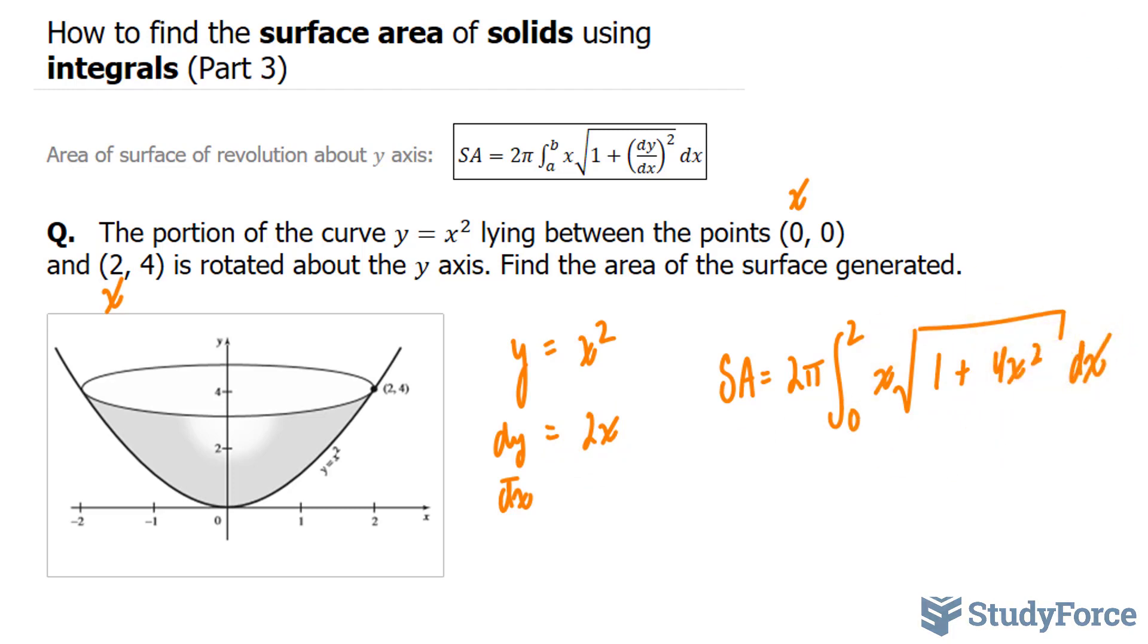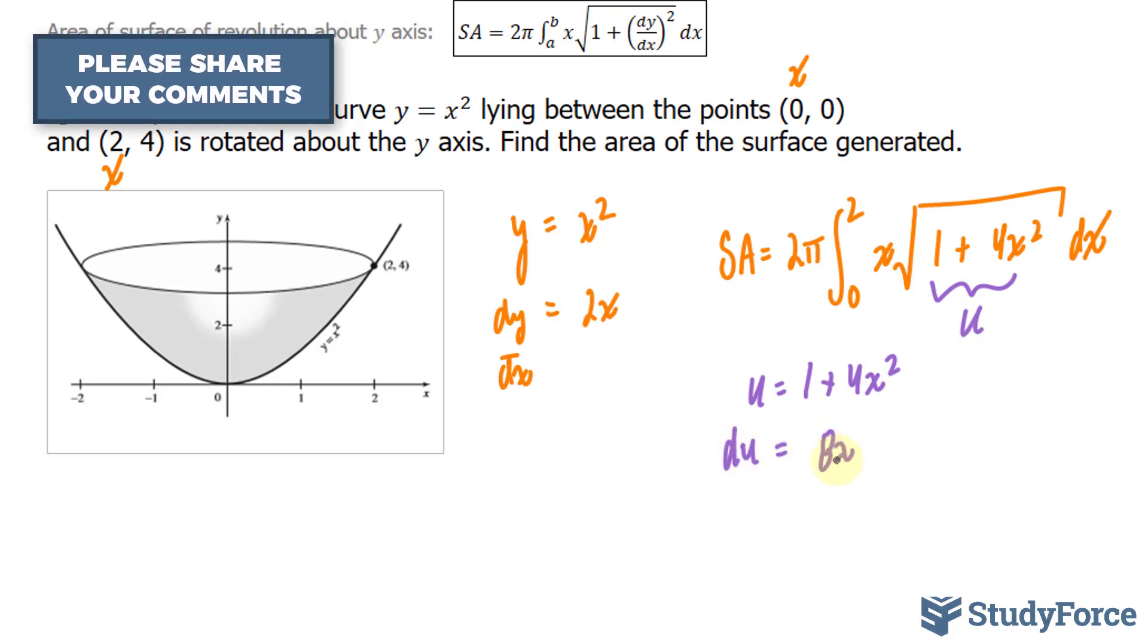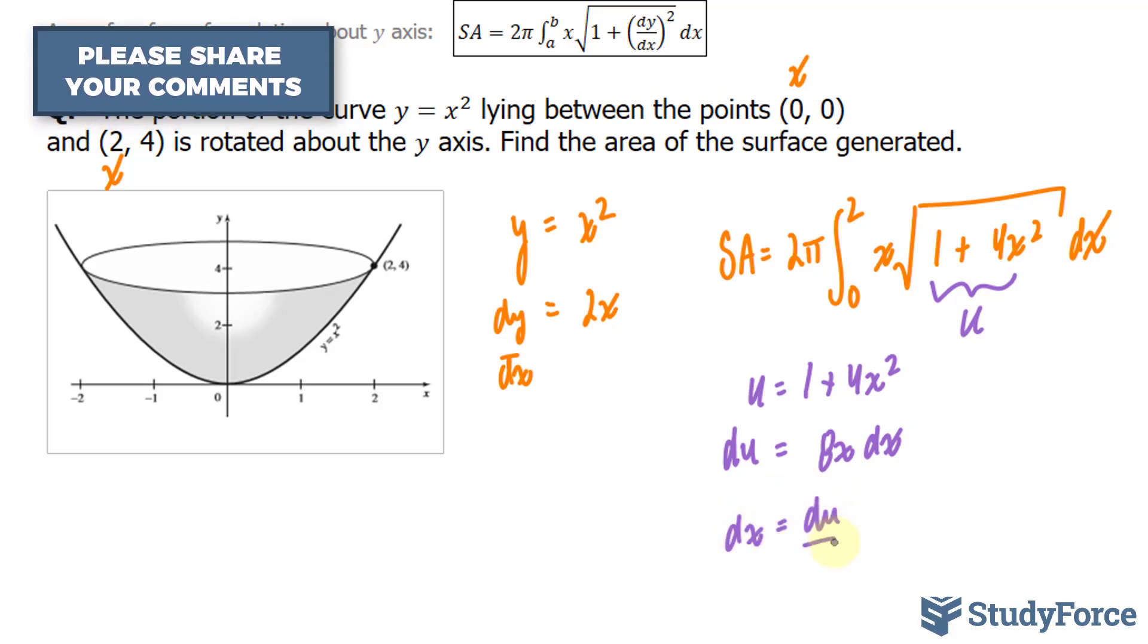Next, we need to integrate this. And we can do that by using u substitution. So I'll use u equals 1 plus 4x squared. Taking the derivative implicitly with respect to x gives us du equals 8x dx. Therefore, dx is equal to du over 8x.